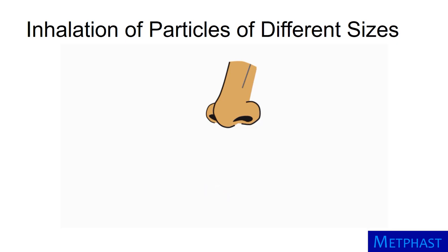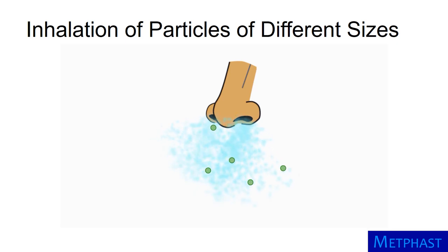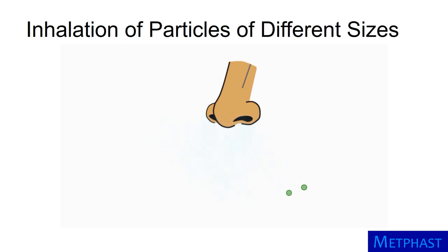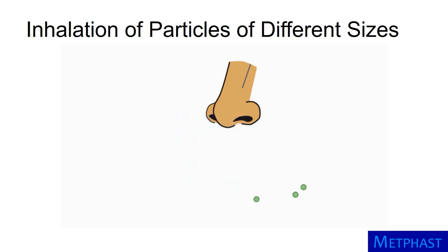Large particles, which have a lot of inertia, may not follow air streamlines as the air turns to be inhaled into the nose or mouth. Some of these particles will fail to be inhaled at all. Most of those that are inhaled will deposit within the respiratory tract, but some will leave with the exhaled air.